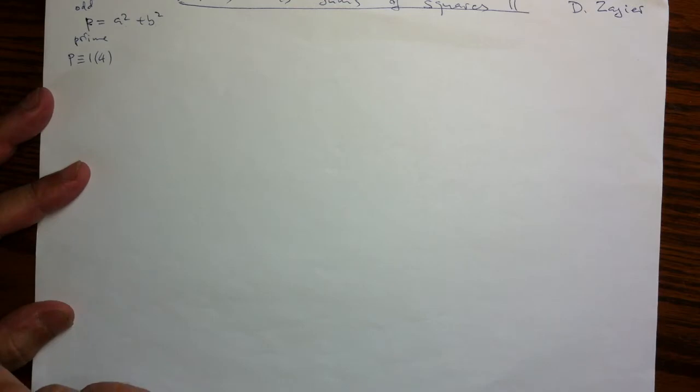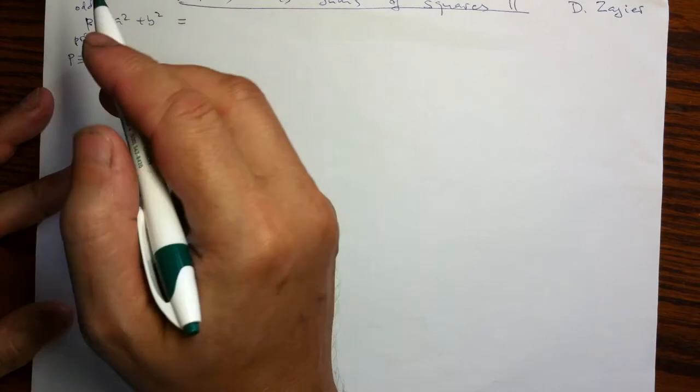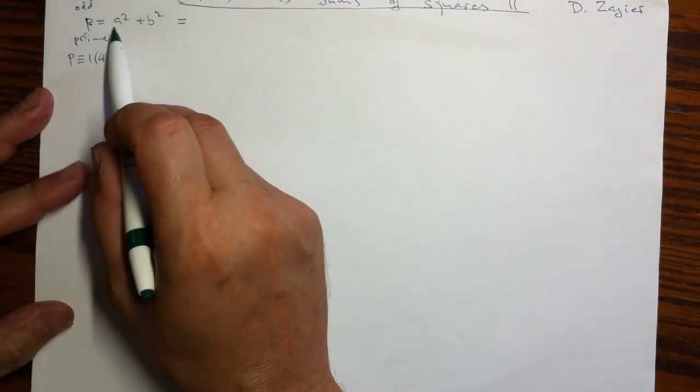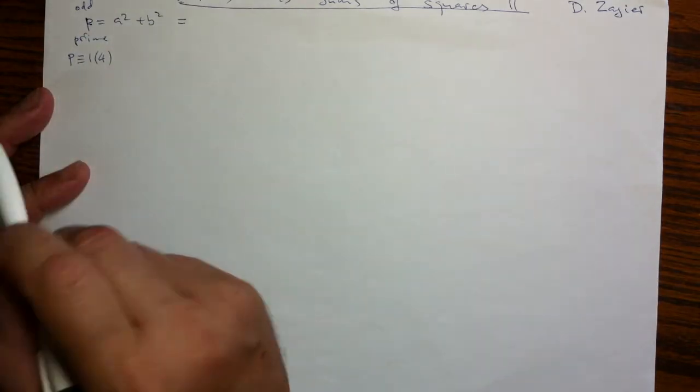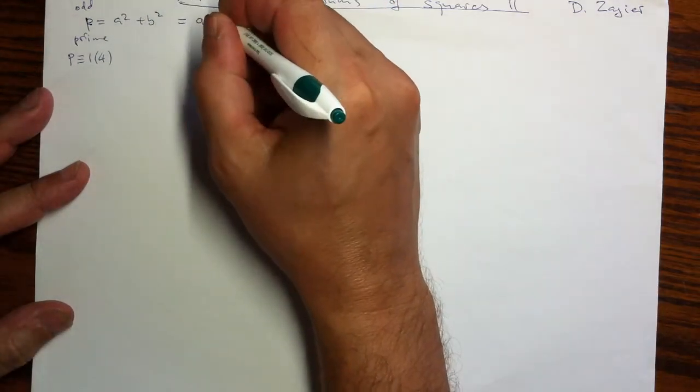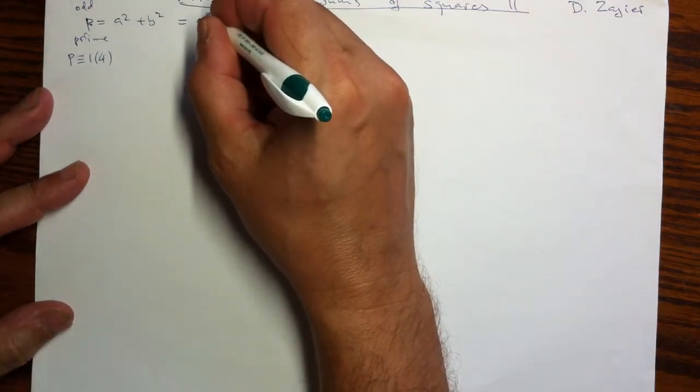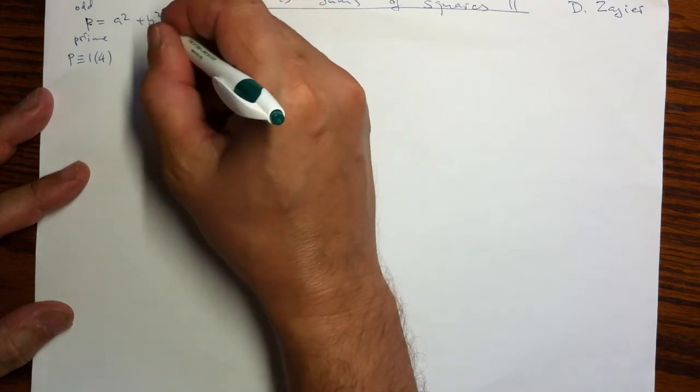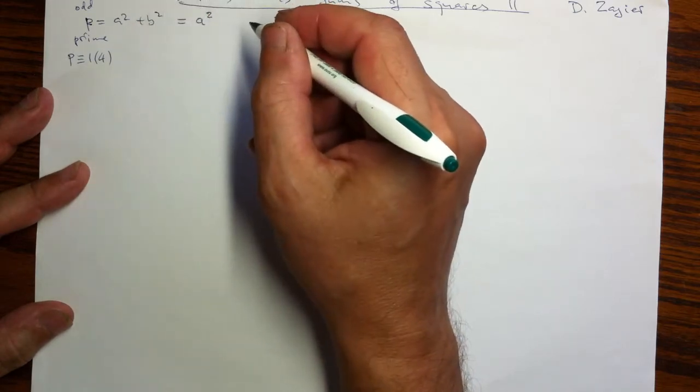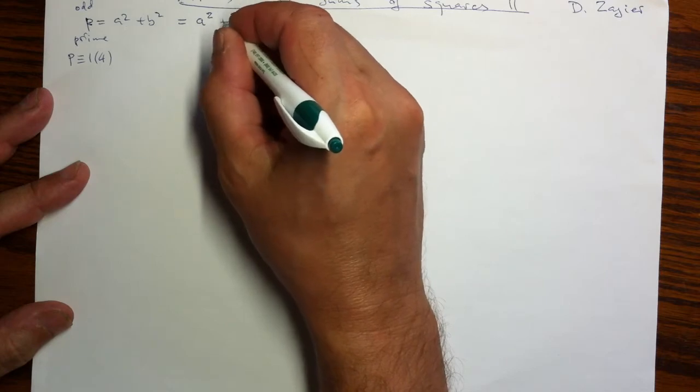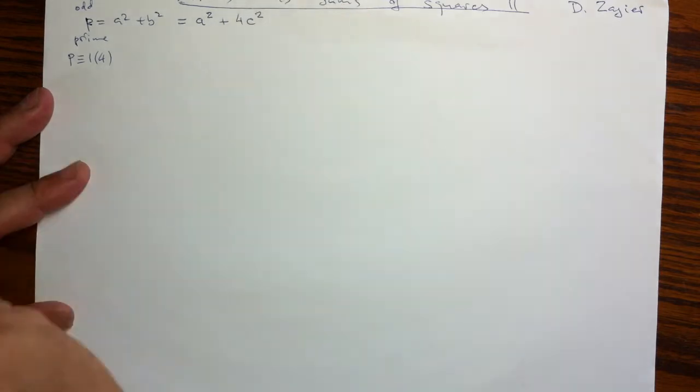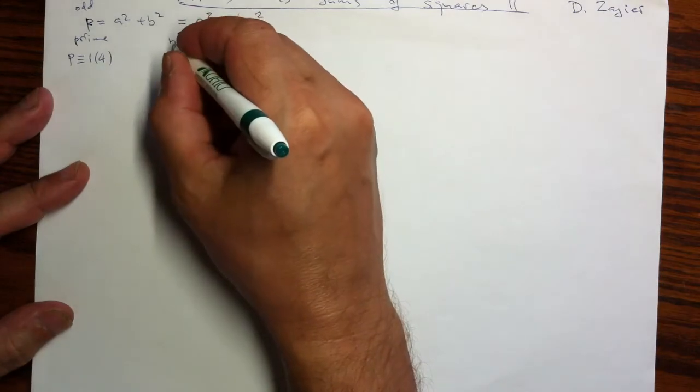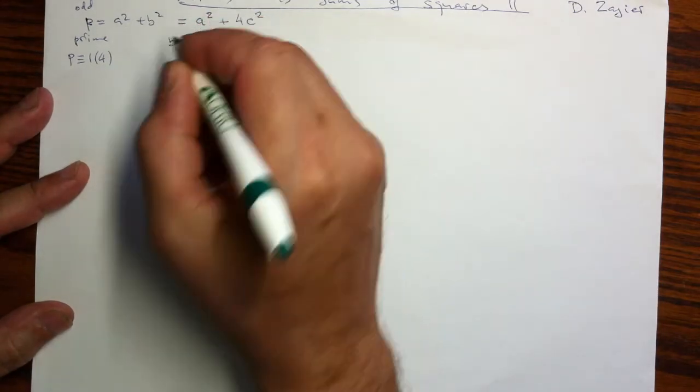So the observation we made last time is, since P is odd, one has to be odd, the other is even. So we can, as before, choose A to be odd, but B being even allows us to rewrite the B squared into 4 times the square of something else, say C. This is because B is 2 times C.